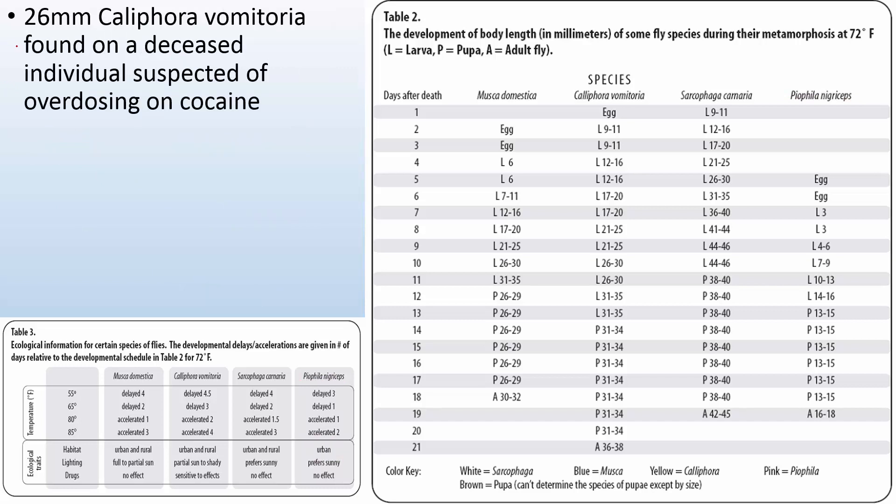What about 26 millimeter califora found on a deceased individual suspected of overdosing on cocaine? So 26 millimeters califora vomiteria. That's this one. Let me find 26 millimeters. That is anywhere in this range. So I got 10 to 11 days. But it says suspected of overdosing on cocaine which is a stimulant. So let's see. California vomiteria. Sensitive to the effects of drugs.